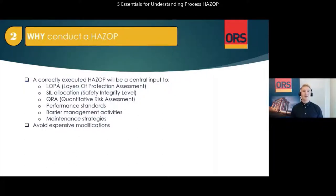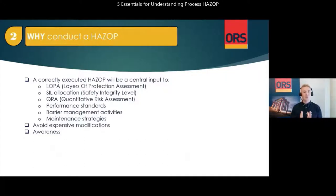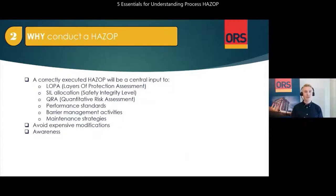We also have financial benefits to the owner of the process by minimizing the time and money spent on potentially expensive modifications to control systems and safety systems by identifying these issues before commissioning. It also functions as a type of awareness training to the team due to the nature of the method — to look at the process from a new perspective, not just how to ensure that this system has high availability, but also how can it fail, does it pose any hazards for people, the environment, our reputation, financially, and what measures do we need to ensure it is performing as intended.